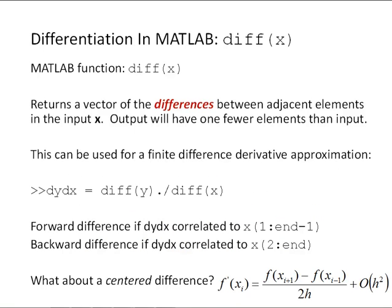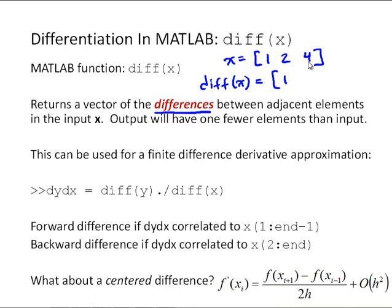First, let's talk about using MATLAB's diff function. The diff function is not actually a differentiation function — it's a function that returns the differences between adjacent elements in the input x. For example, if x equals the vector 1, 2, 4, then diff(x) would be the differences of those adjacent elements: 2 minus 1, or 1, and 4 minus 2, or 2. The output will always have one fewer element than the input. We can use the diff function to develop a finite difference derivative approximation.